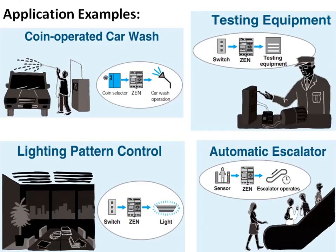Examples of simple applications where smart relays are used include: a coin-operated car wash with two or three outputs and two or three inputs; testing a motor where the output is one and there are two or three inputs used as buttons; lighting pattern control; and automatic escalator control, where a proximity sensor senses the presence of persons and automatically switches the escalator on or off to save energy. All these involve a low I/O count.